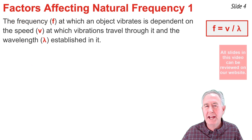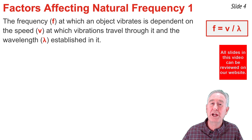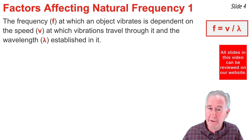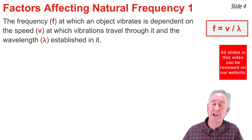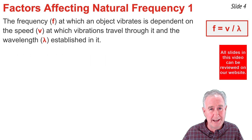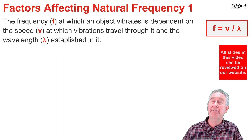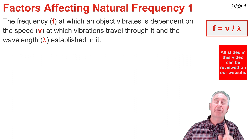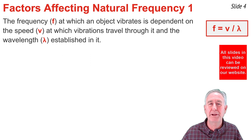The natural frequency or set of frequencies at which an object vibrates depends upon two main factors: the speed at which vibrations travel through the object, and the wavelength established in that object. That's not surprising because frequency equals speed divided by wavelength.